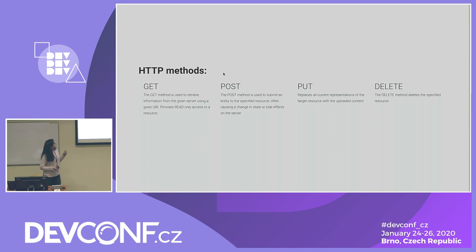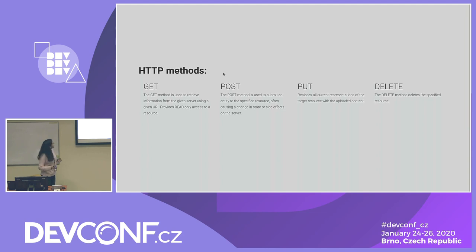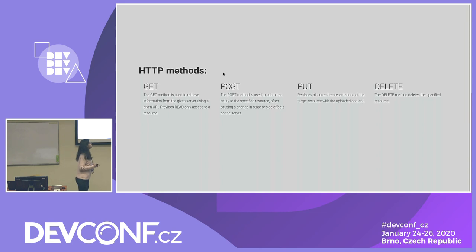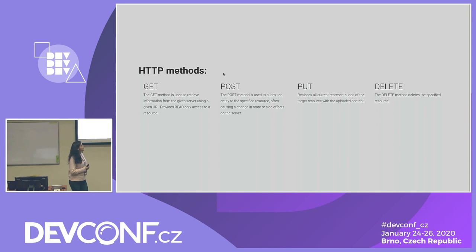The HTTP methods: the GET method is used to retrieve information from a given server using a given URI — it provides only read access. All four methods correspond to the CRUD operations. GET corresponds to read. POST corresponds to create — it's used to submit an entity to a specified resource and makes a change in state, like filling up a form. PUT is for updating — it updates the targeted resource with the content you sent, like editing form entries. DELETE is self-explanatory — it deletes the specified resource.